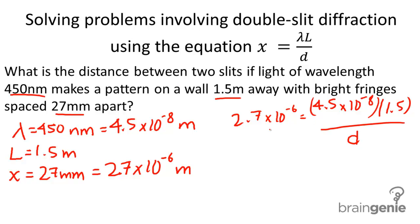d is the distance between the two slits. When we solve for d, we get d equals 2.5 times 10 to the negative sixth meters, and that's my final answer.